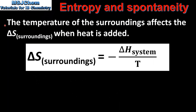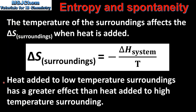The temperature of the surroundings affects the entropy change when heat is added. The change in entropy of the surroundings is equal to the negative enthalpy change of the system divided by the temperature. This means the change in entropy of the surroundings is directly related to an opposite change in the heat of the system and inversely related to the temperature of the surroundings. So heat added to low temperature surroundings has a greater effect than heat added to high temperature surroundings.